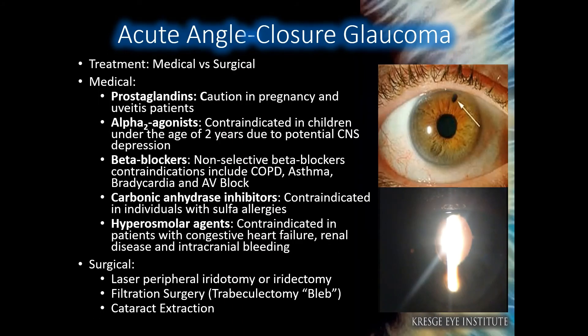Management of acute angle-closure glaucoma may vary due to physician preference; however, it is important to rapidly initiate intraocular pressure lowering medications. These come in the form of drops such as prostaglandins, alpha-2 agonists, beta blockers, carbonic anhydrase inhibitors, or hyperosmolar agents. Consider the contraindications in each drug class.